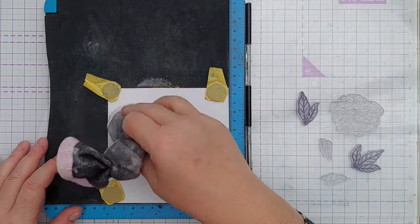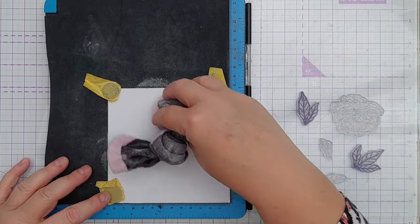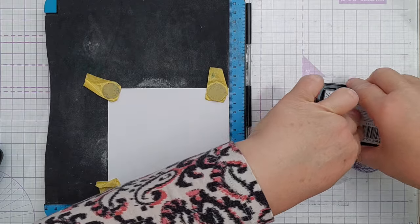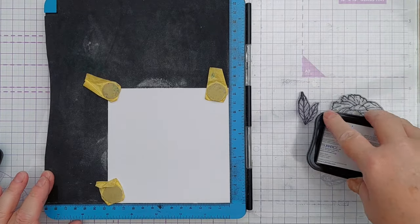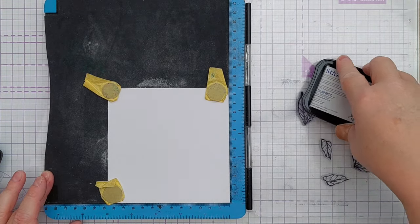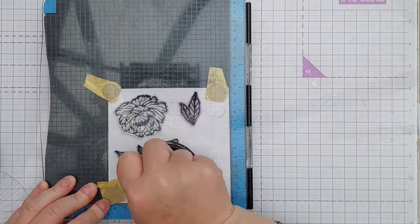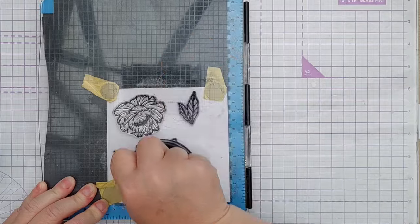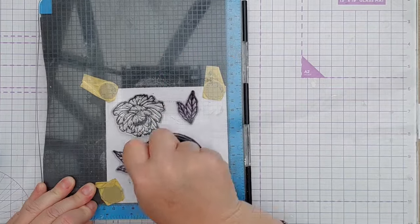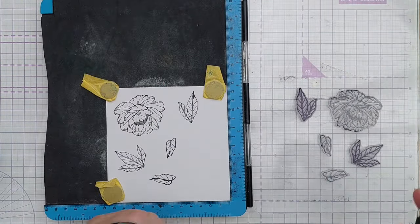The first thing I did was take some mixed media paper, pop it in my stamp positioner, and then dust it with corn flour to remove any static, grease, or moisture. Then I stamped on some leaves and a flower using Stazon because these stamps are made of silicone and Stazon works really well on silicone stamps.